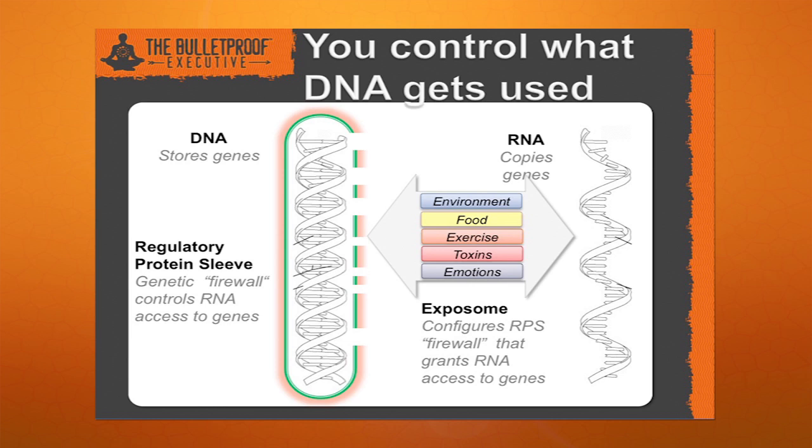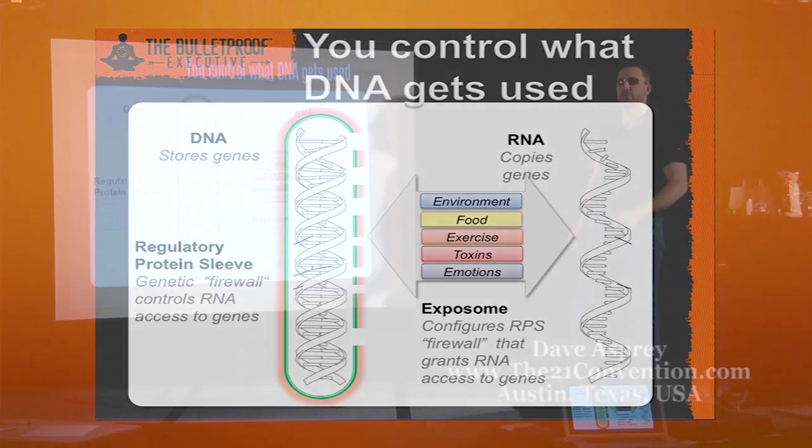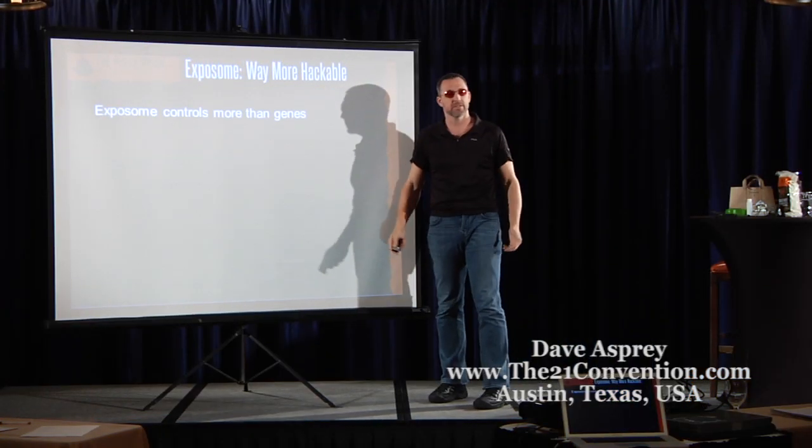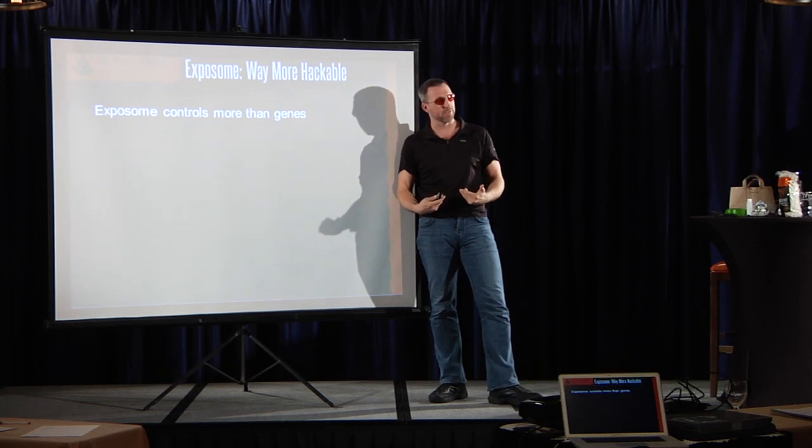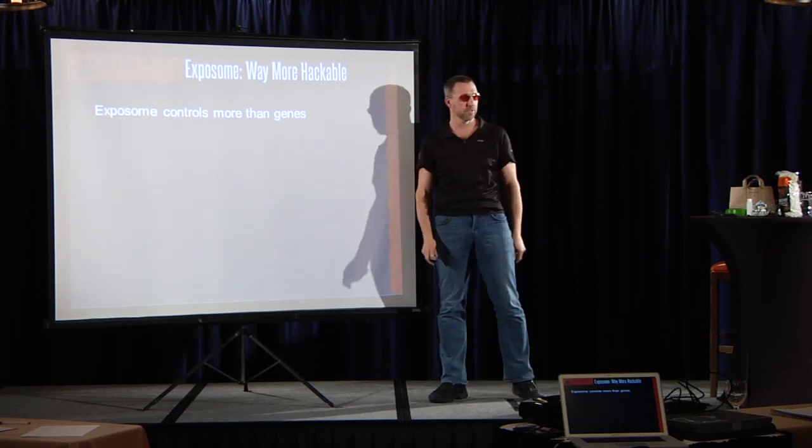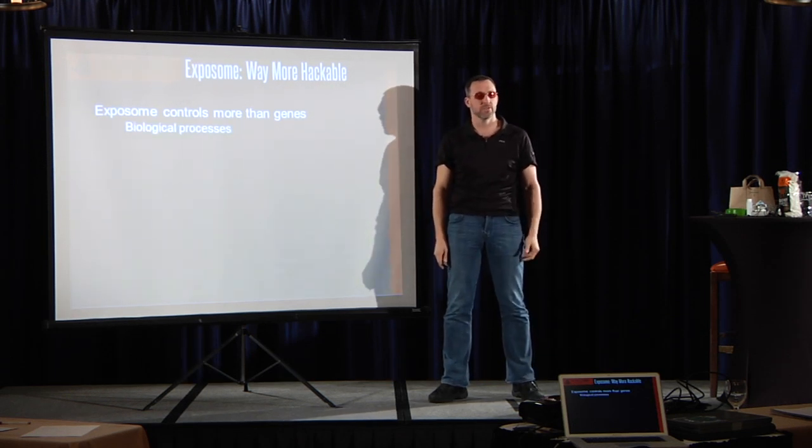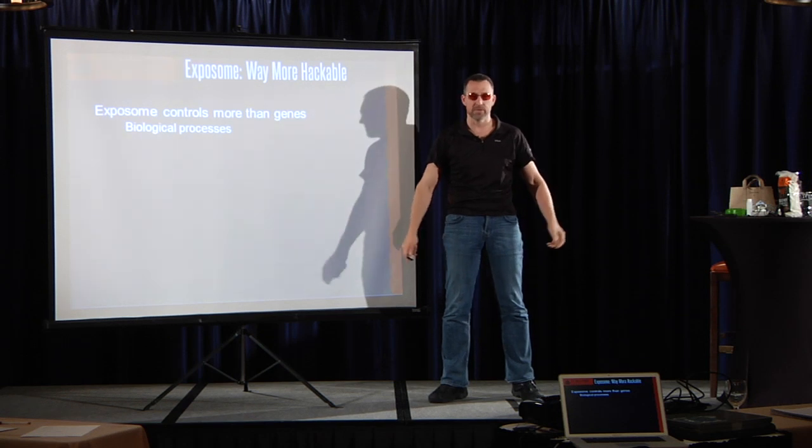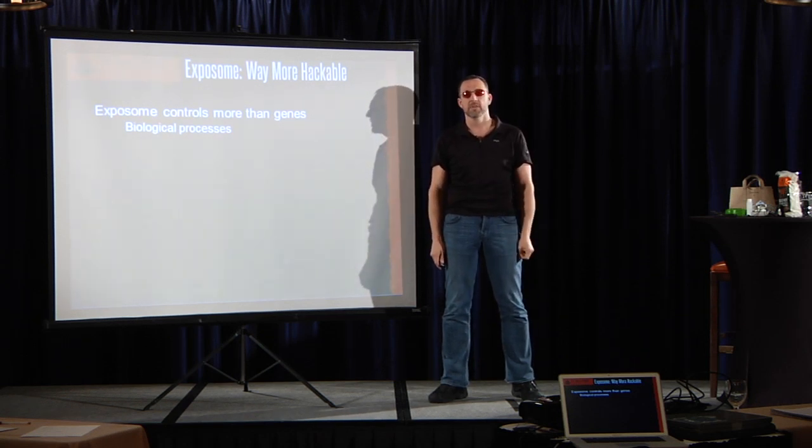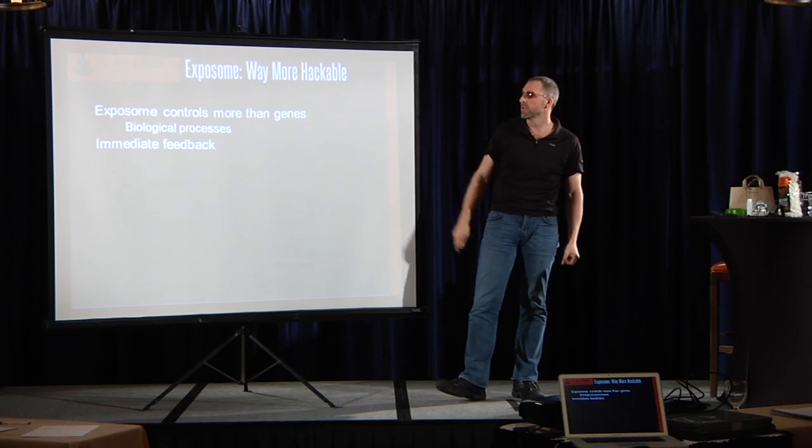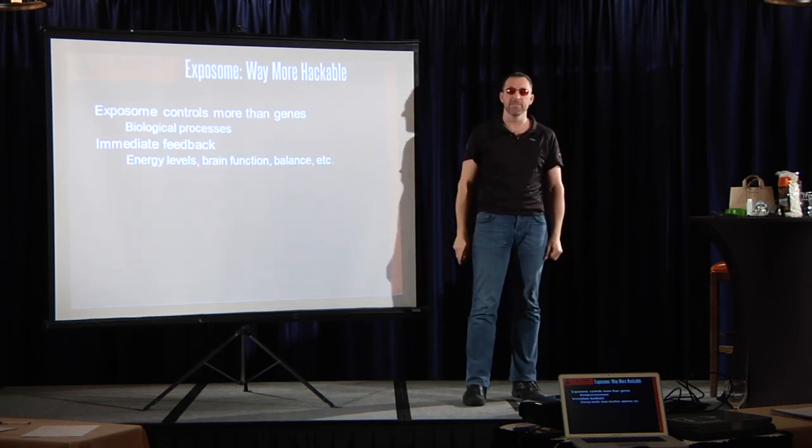Your environment, your food, your exercise, your toxins, and your emotions. What you think about and what you feel change which genes get expressed. You can hack your exposome pretty easily. You can change the room temperature. You can eat a healthier diet. You can calm your emotions.